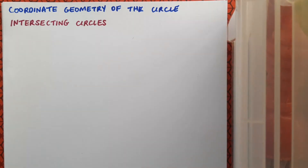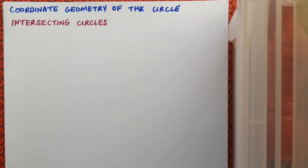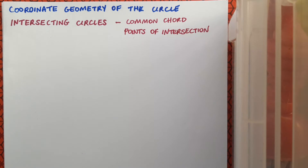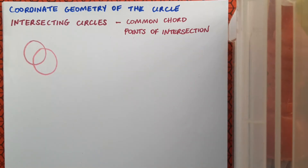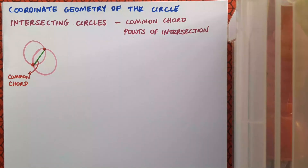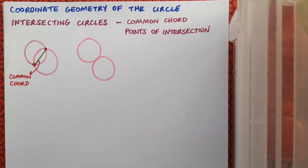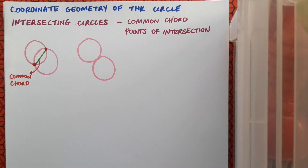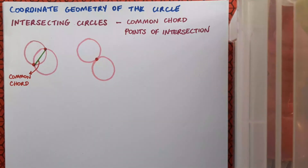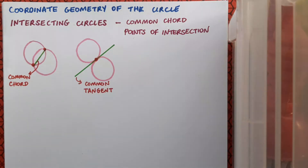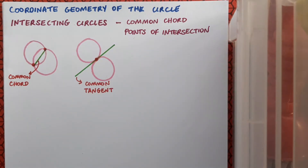This video on coordinate geometry of the circle looks at intersecting circles, finding the common chord and the points of intersection. Here we have two intersecting circles - in one case they meet at two points and share a chord, in the second diagram the circles intersect at only one point, giving a common tangent. We're going to start by looking at how to find these common chords and common tangents.